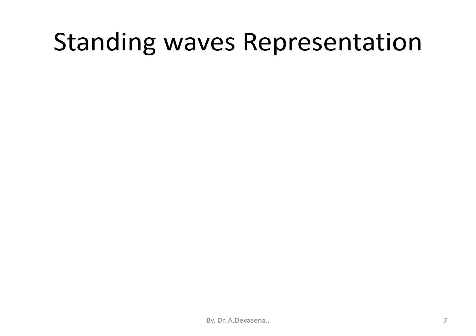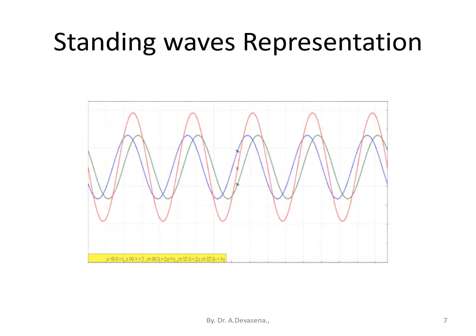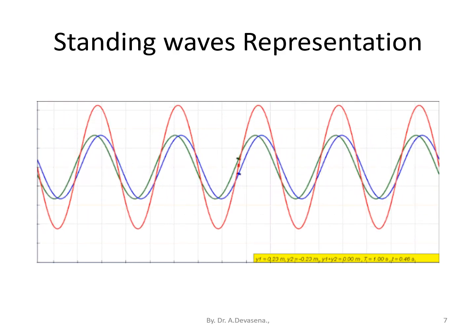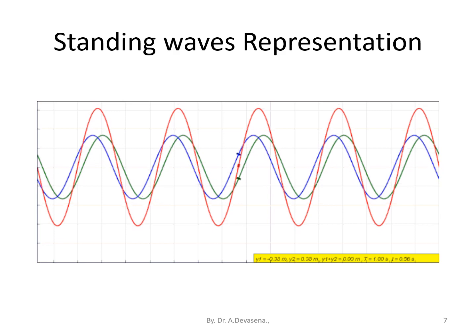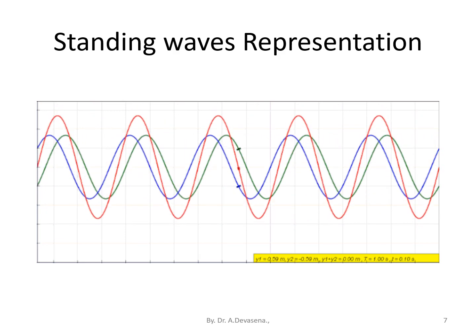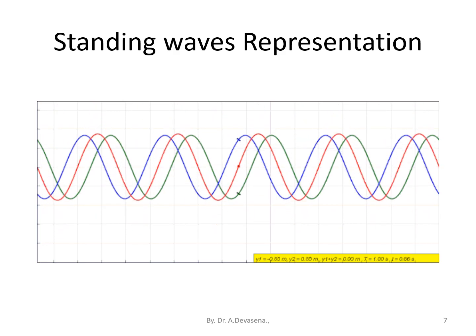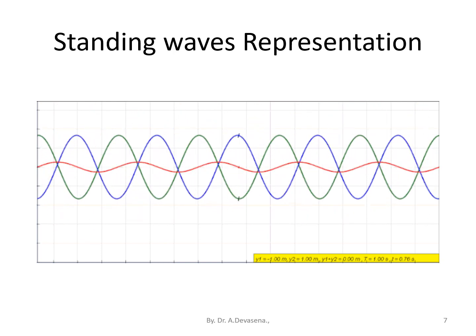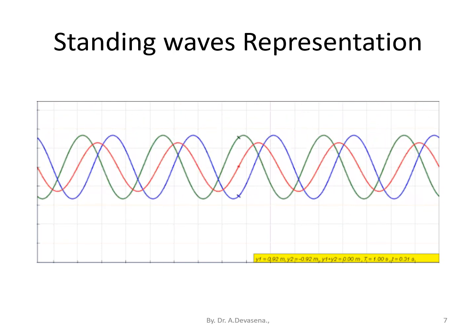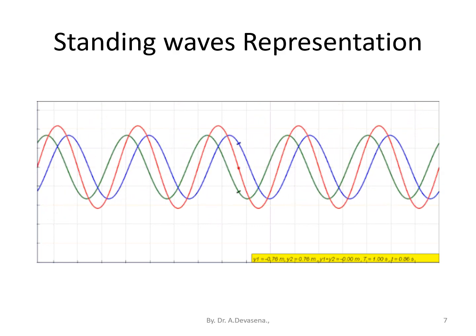Standing waves representation is shown here. In this diagram we are seeing a blue color wave moving in the left hand side and a green color wave moving in the right hand side. The red color wave is the summation of these two waves, and this is the representation of the standing waves.